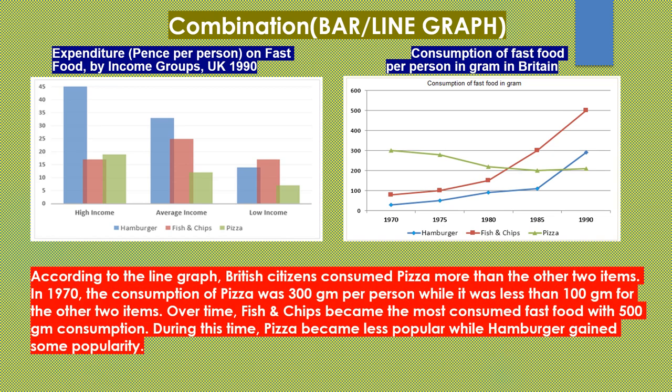According to the line graph, British citizens consumed pizza more than the other two items. In 1970, the consumption of pizza was 300 grams per person, while it was less than 100 grams for the other two items. Over time, fish and chips became the most consumed fast food with 500 grams consumption. During this time, pizza became less popular, while hamburgers gained some popularity.